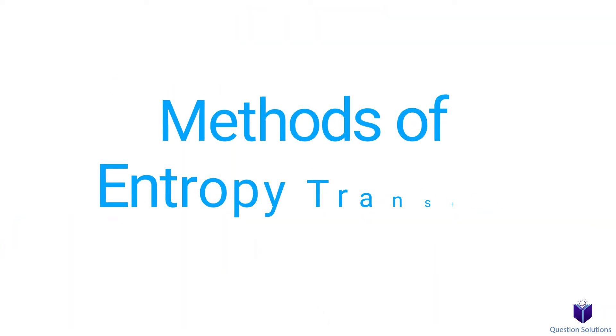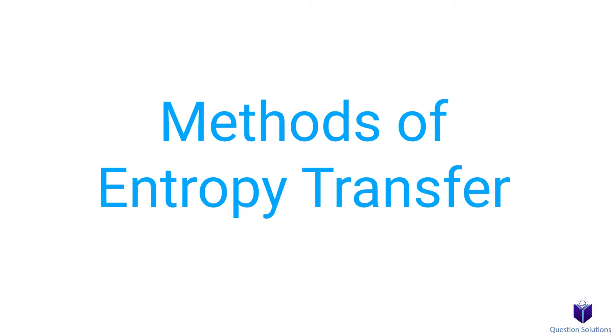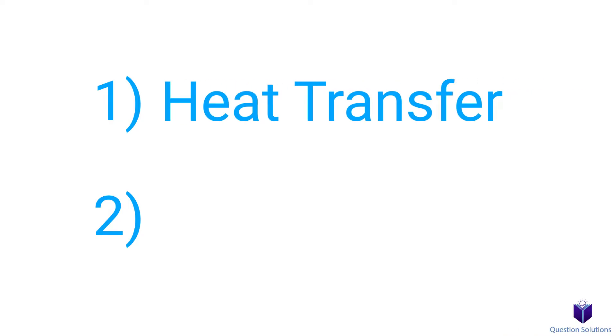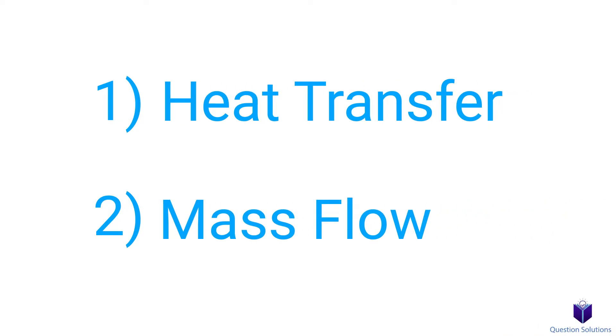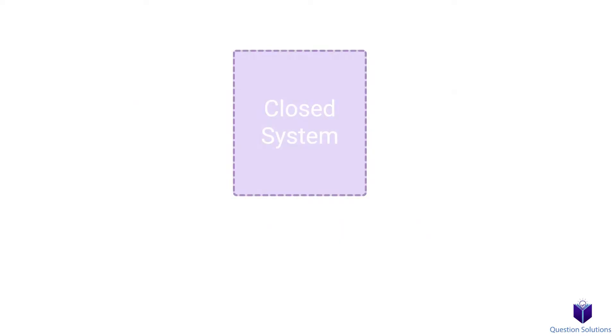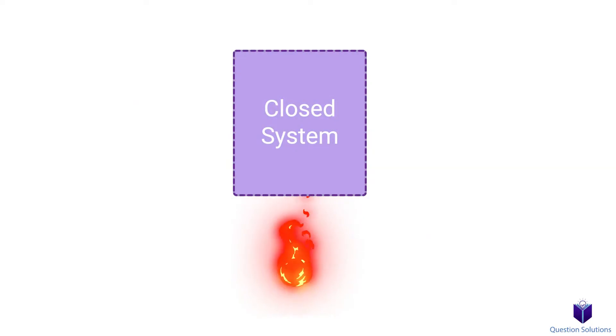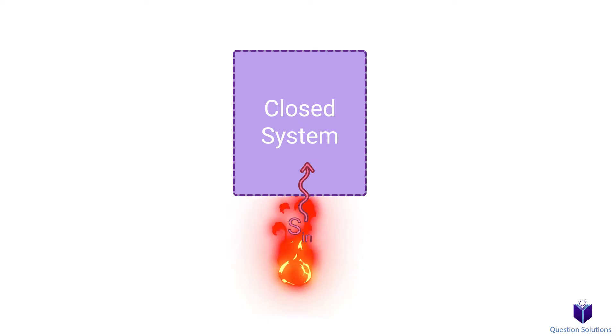How does entropy transfer into and out of a system? There are just two ways entropy is transferred to a system. The first is heat transfer, and the other is mass flow. That's it. That means if you have a closed system, then the only entropy transfer that can happen is through heat, not work or anything else, just heat.